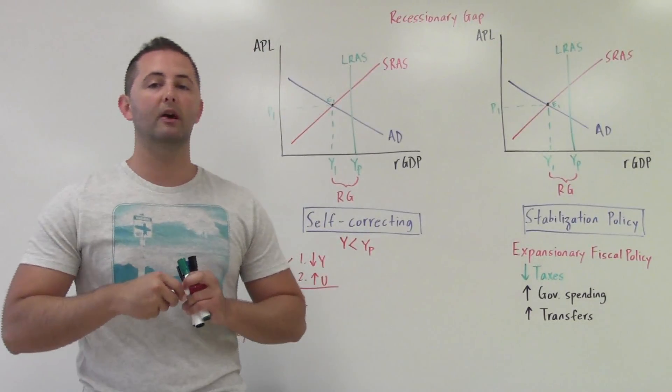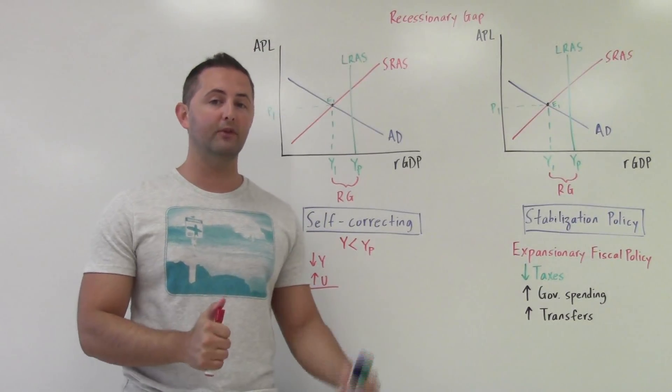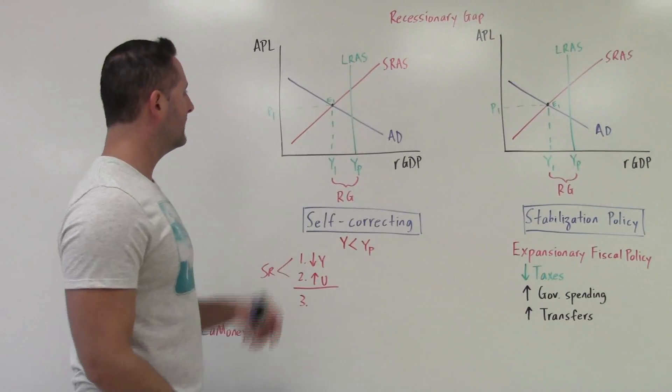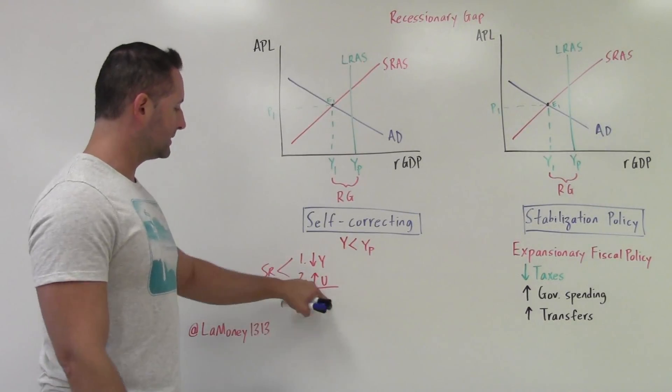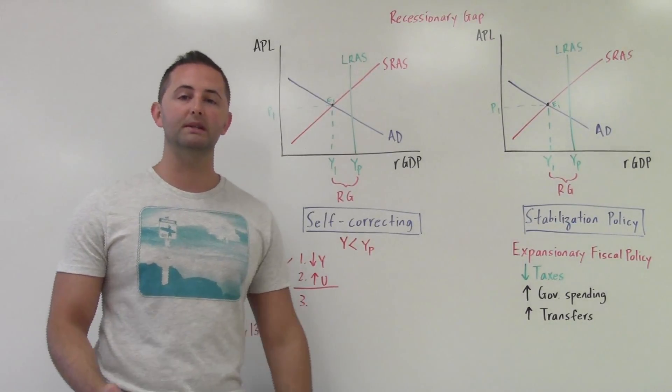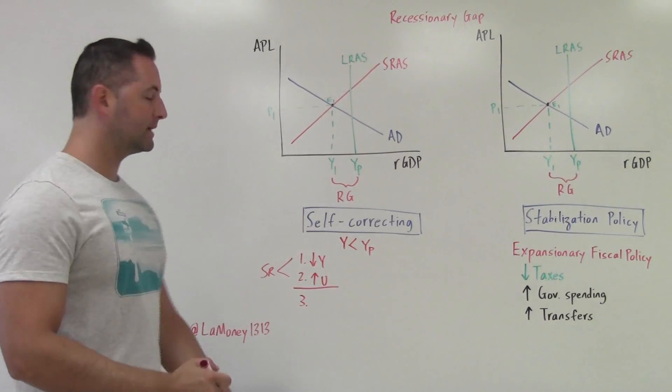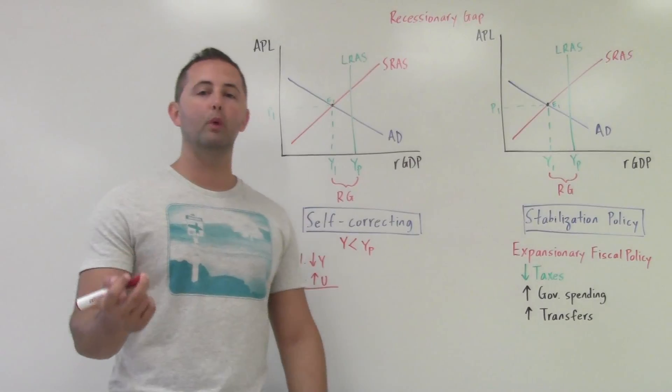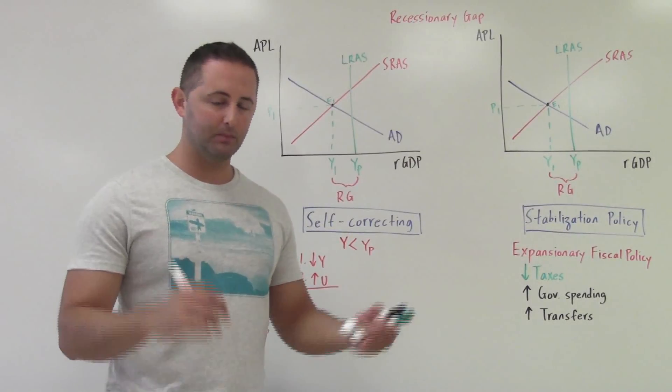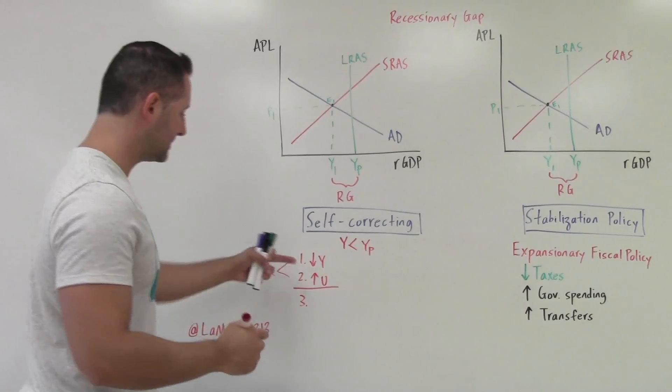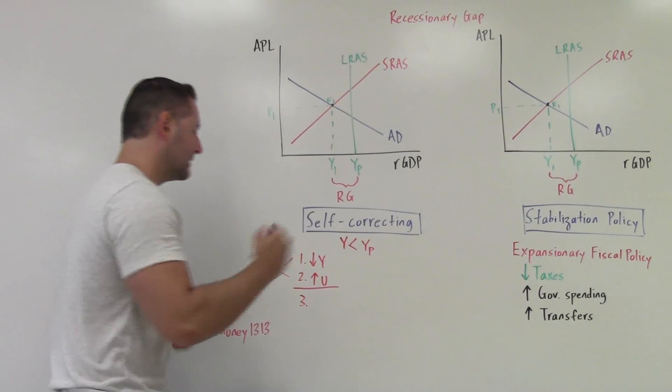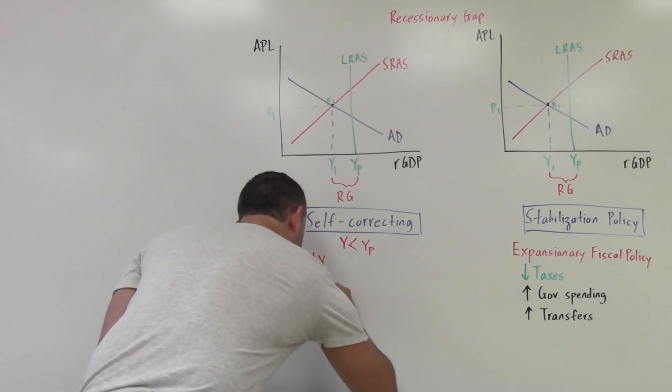So how does the economy self-correct? We did talk about this in a previous video. Hopefully you already know the key is going to be what happens to wages. So if we have rising unemployment, what's going to happen to wages? Well, there is also a negative relationship between unemployment and wages. If unemployment rises, wages are going to fall.